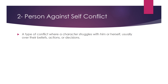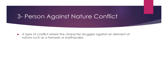That's why this psychological, internal type of conflict is so apparent and recurrent in short story. Let's move to the third one: person against nature conflict. It is a type of conflict where the character struggles against an element of nature, such as a tornado or an earthquake.